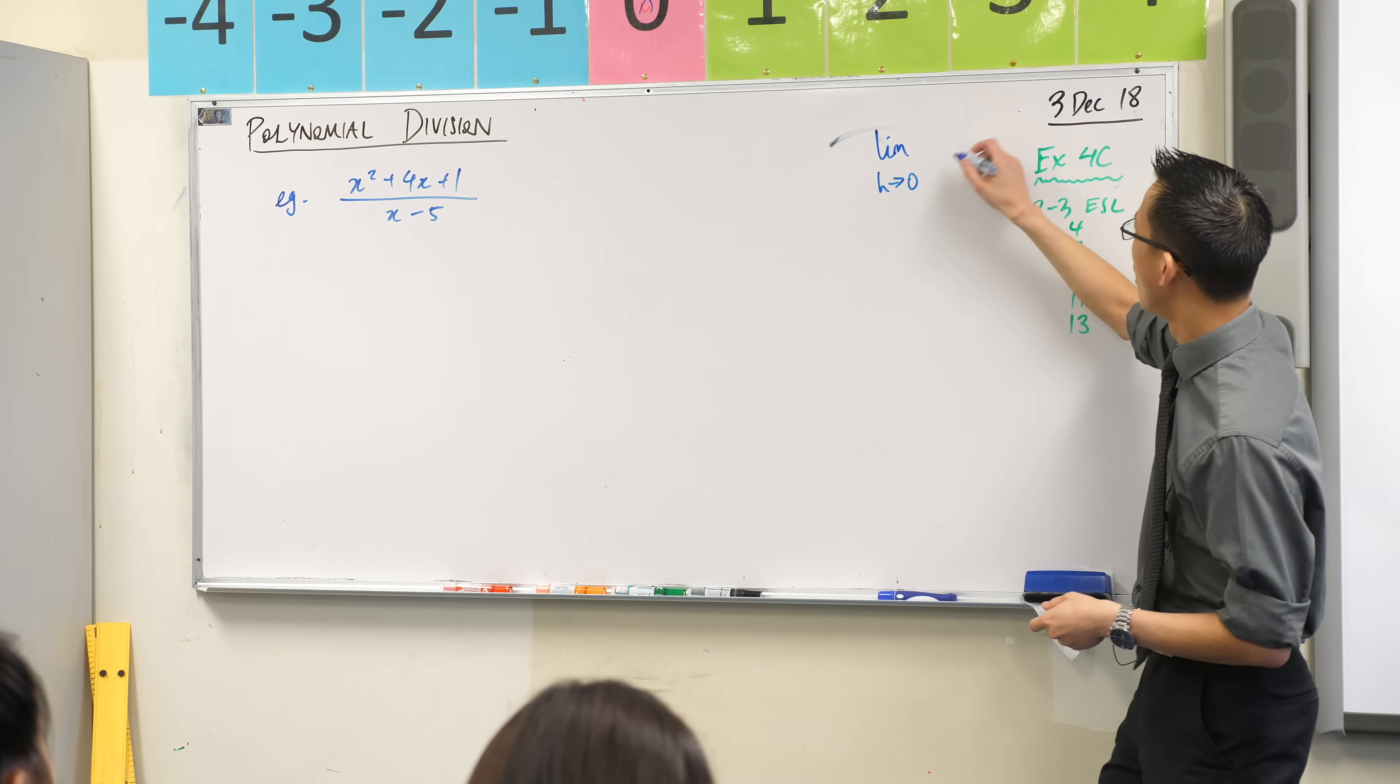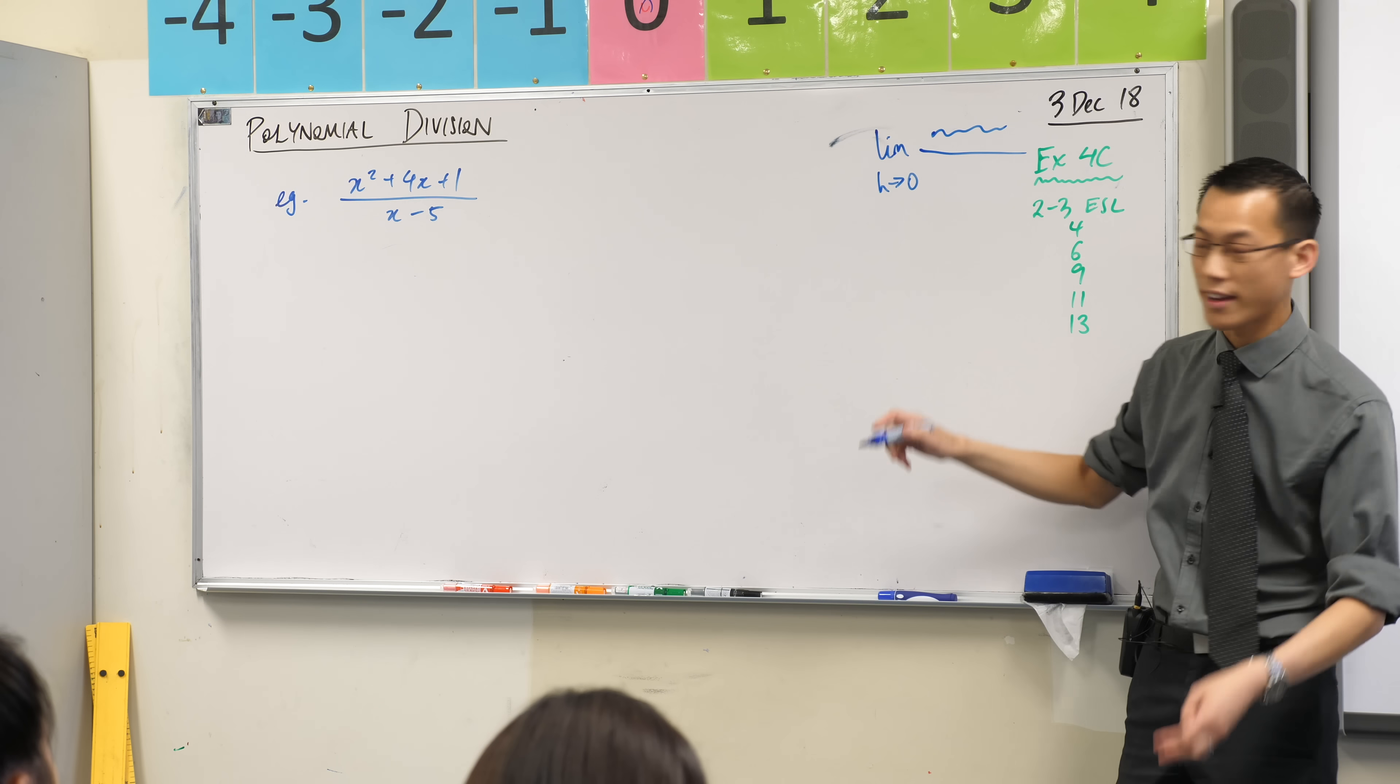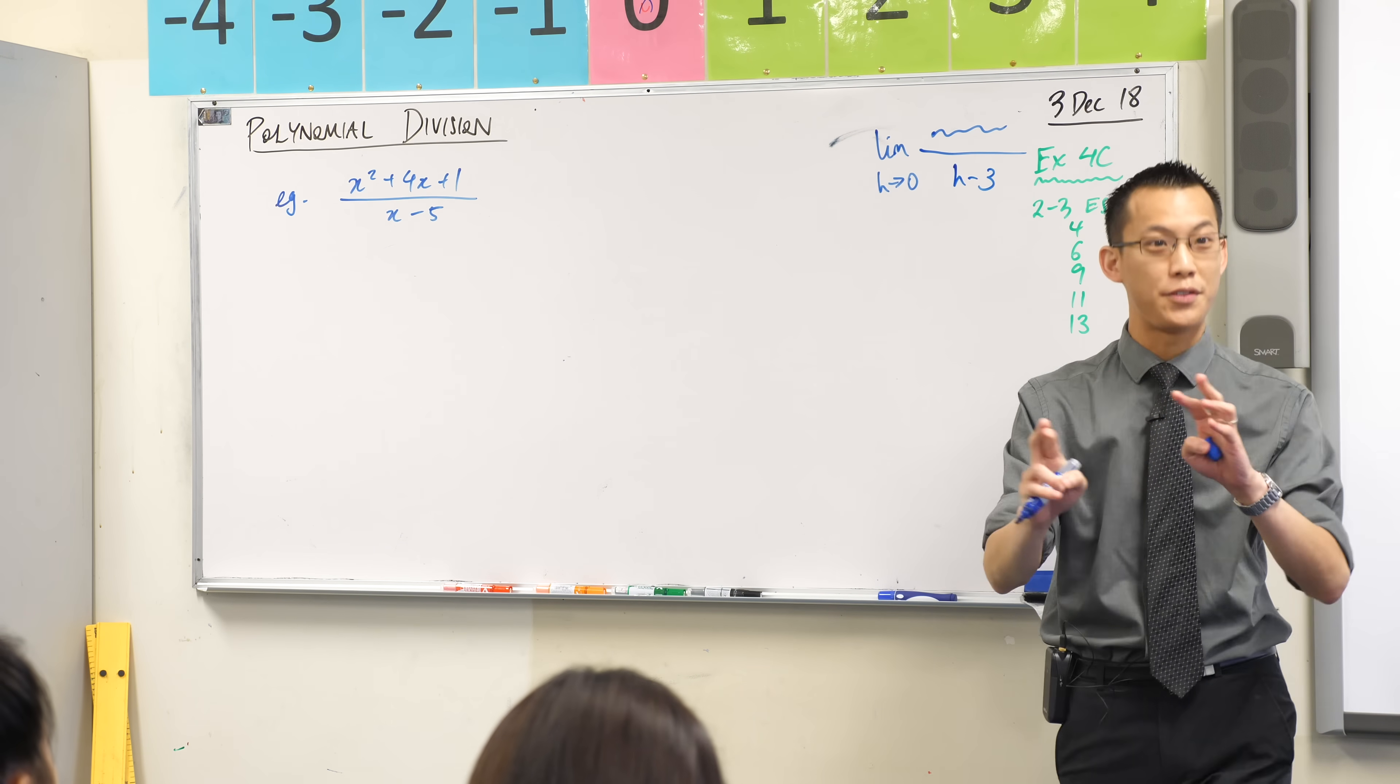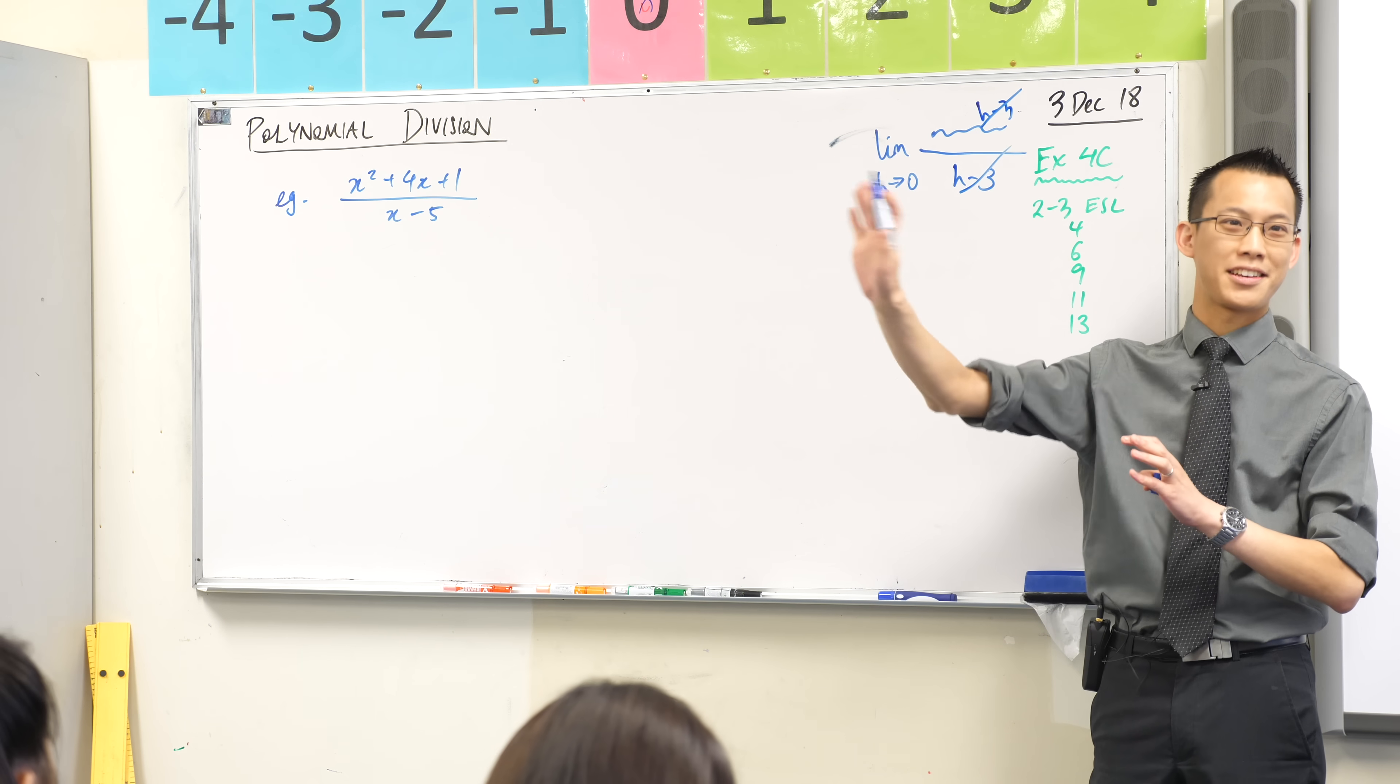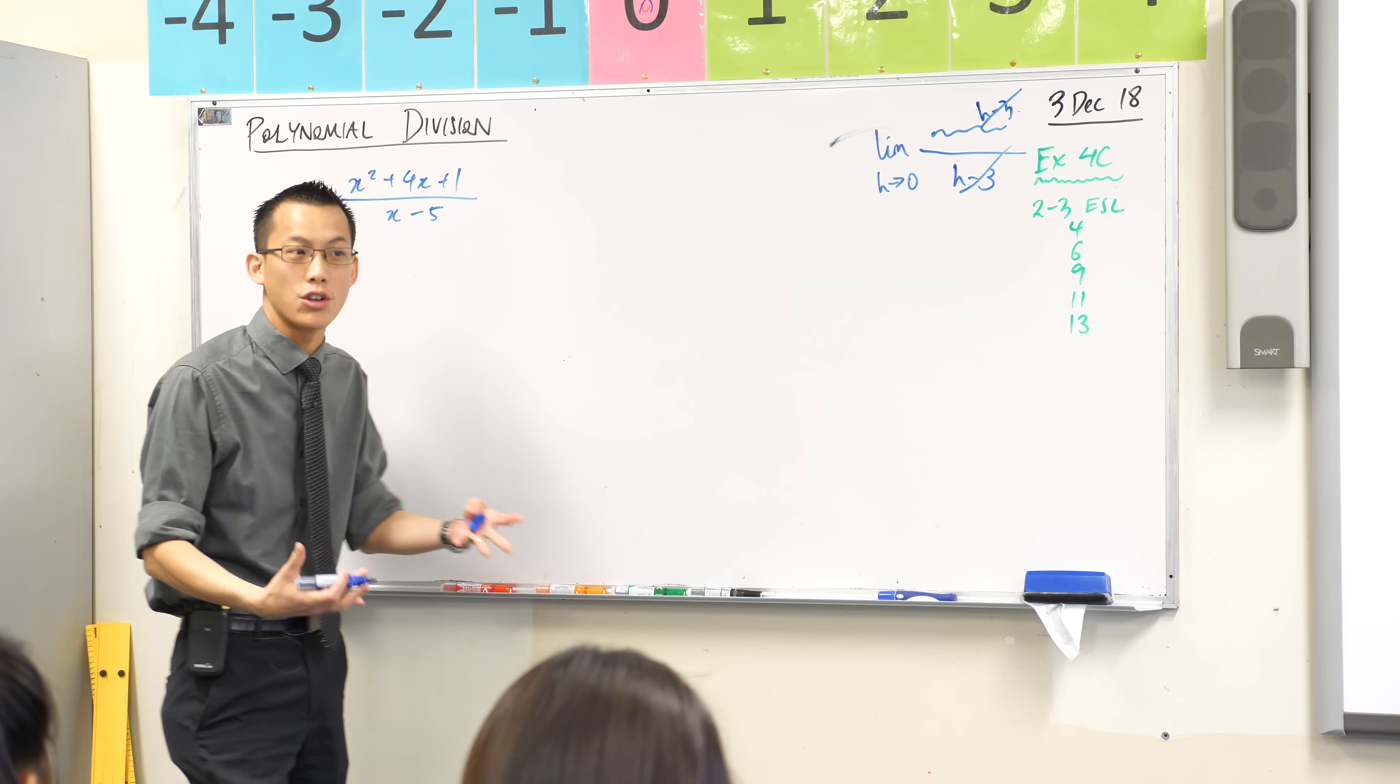Do you remember when you had to do limits? Limit as h approaches zero, and then you had some fraction, some polynomial at the top in h, like a quadratic, and something like this down the bottom. And you knew, fingers crossed, if you did everything right, then you would get h minus 3 on the top and you could cancel, and everything was nice and neat. But this is not like that, this is a mess, where do you even go?